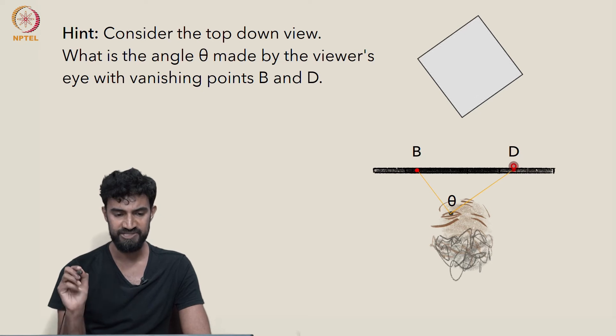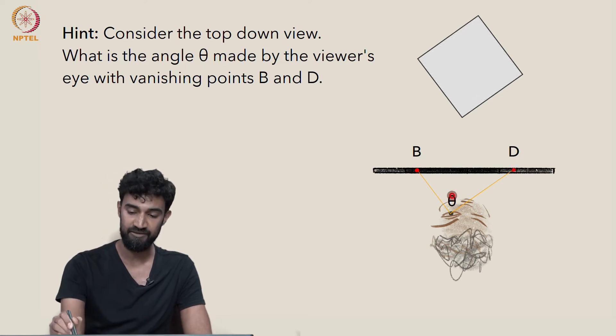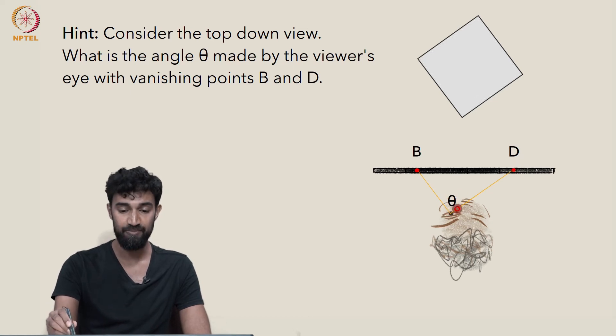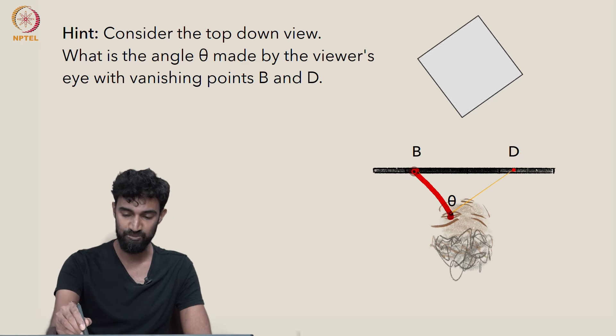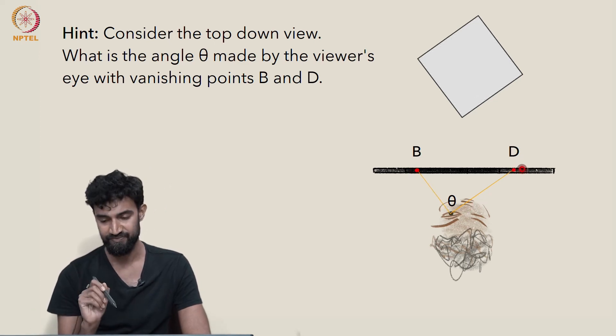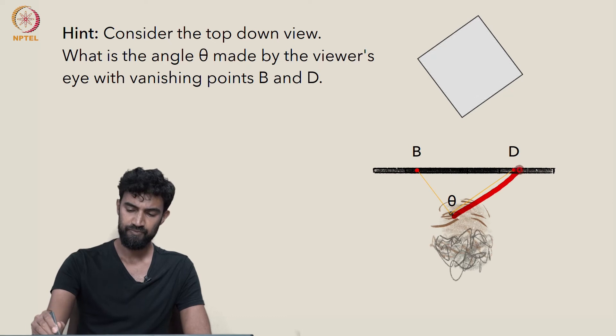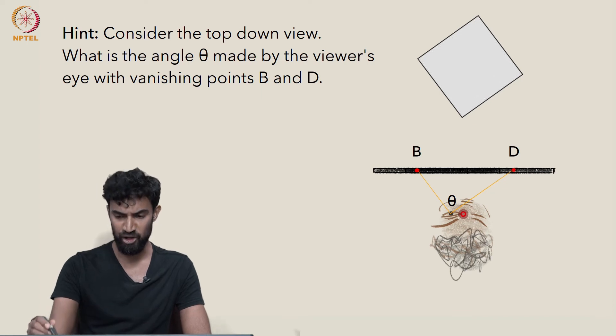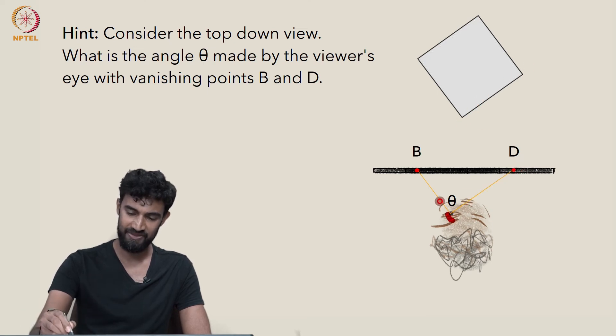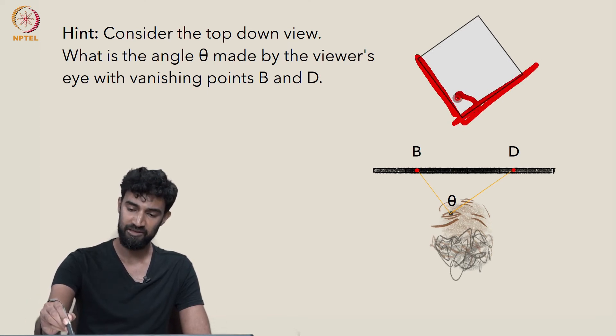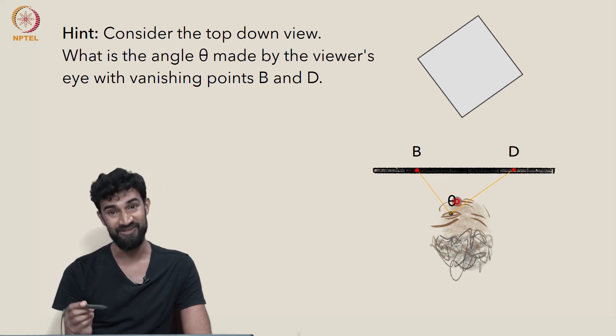So you get your two vanishing points that way. And as a hint, a first thing to consider: what is the angle theta made by the viewer's eye with the vanishing points B and D? What angle theta do you make? And once you've done that, okay, I'll give a little bit more of a hint because this is a tricky problem. That angle theta—well, we've seen that this line is parallel to this line. This sight line is parallel to this sight line. Well, these two lines, they form what angle here? This is a square, so this is a right angle. So theta is also going to be a right angle.